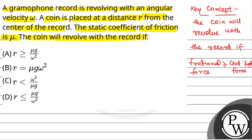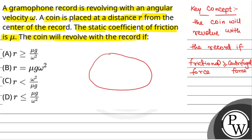If friction force is greater than or equal to centrifugal force, then only the coin will revolve with the record. Suppose this is the gramophone record and it is revolving with an angular velocity omega. A coin is placed at a distance r from the center. The coin will experience a frictional force directed inward.